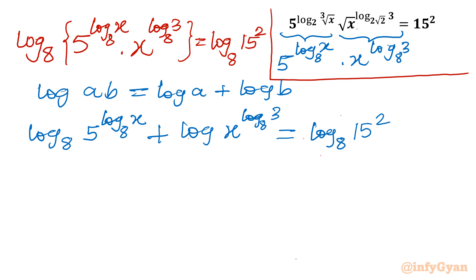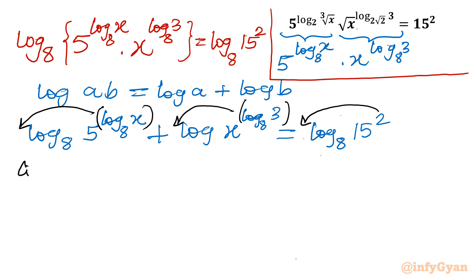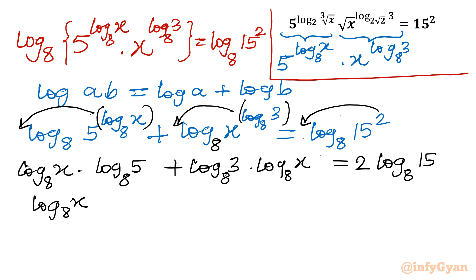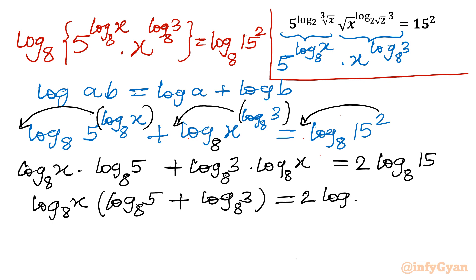Now the log(a^b) = b·log(a) property comes into the picture. Each exponent becomes a multiplier. So we write: (log x base 8)·(log 5 base 8) + (log 3 base 8)·(log x base 8) = 2·(log 15 base 8). We can see that log x base 8 is common on the left side, so we factor it out: log x base 8 · (log 5 base 8 + log 3 base 8) = 2·(log 15 base 8).